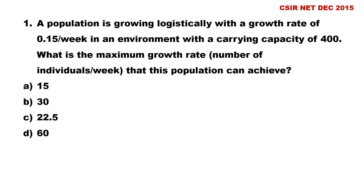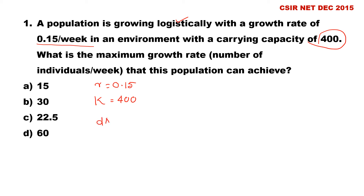What is given in this question? The population is growing logistically with a growth rate of 0.15 per week, so r = 0.15 — that is the per capita rate of increase. The carrying capacity K = 400. We have to calculate the maximum growth rate, that means the number of individuals per week, which is dN/dt.